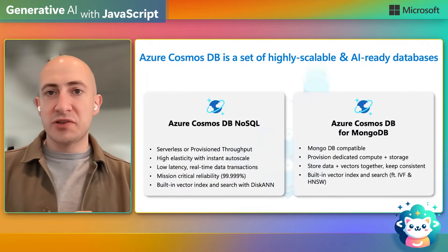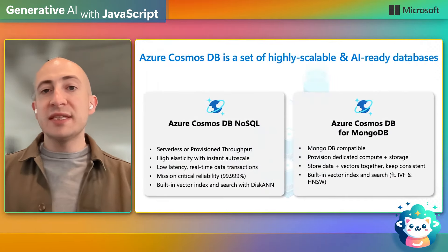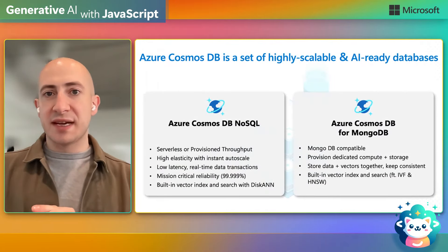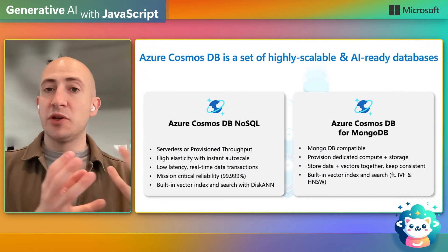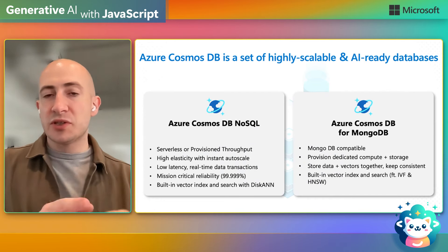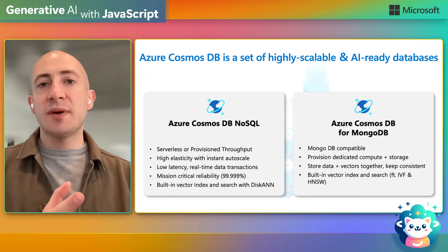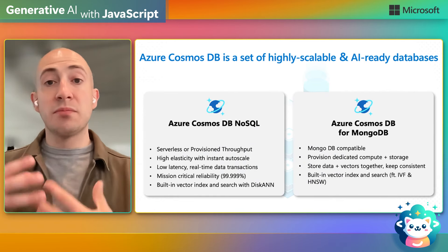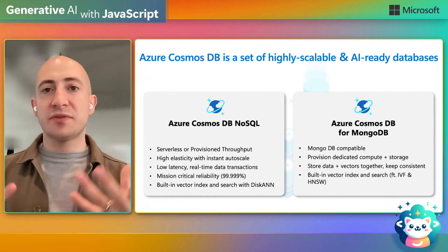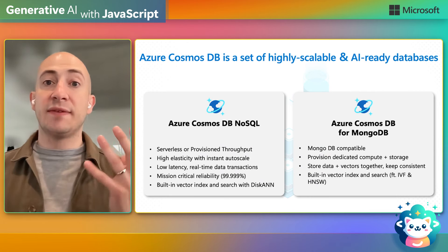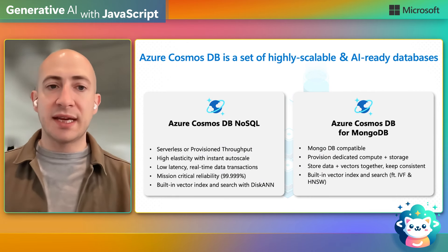Let's talk a little bit about Azure Cosmos DB. In principle, we have two flavors of Cosmos DB. We have our Cosmos DB for NoSQL offering, which is our core Cosmos DB offering, and we also have a Cosmos DB for MongoDB offering. Both of these offerings have vector search capabilities and are great for AI applications.